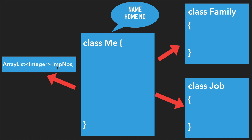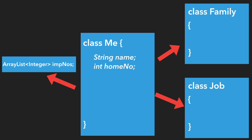Whatever we saw in the last slide, I've now converted everything into something familiar because it's all in Java. For name, I need to store a String, so I'll write 'String name.' For home number, which is a number, I'll store it as 'int homeNumber.' So name and home number are stored with String and int data types respectively.